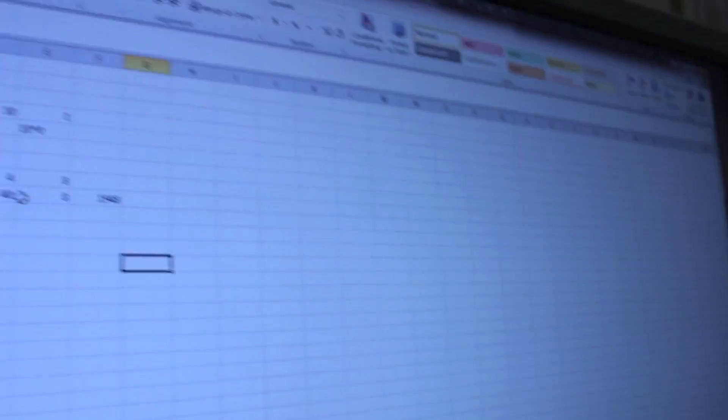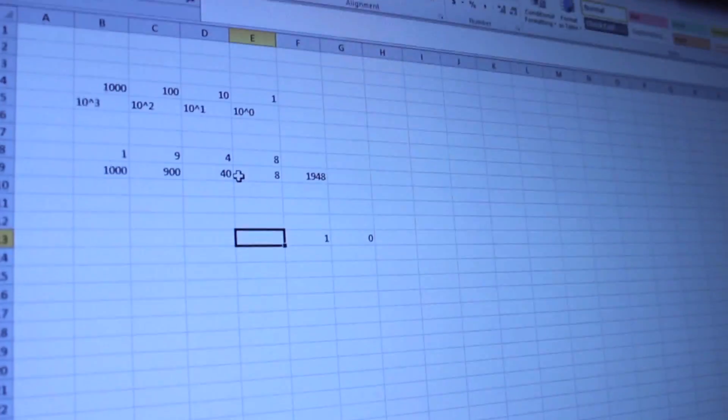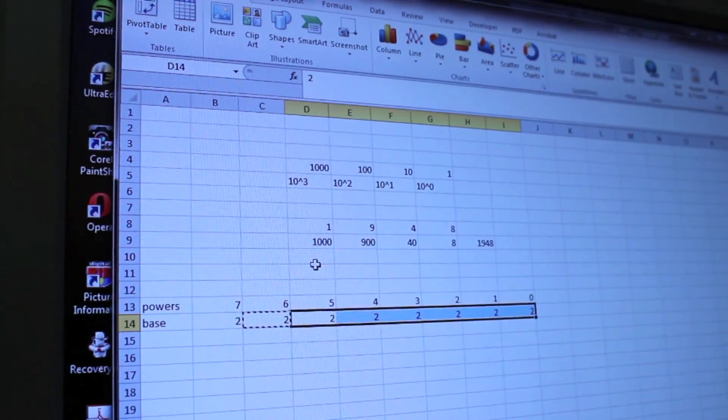If you understand that much, the rest is real easy. So these will be the powers, the zero power, the one power, the two power, three power, four power. I'm going to say that the base is going to be two. So we've got the same thing here. In base two, you've got the zero, and you've got one.